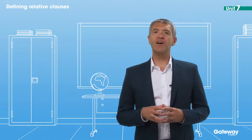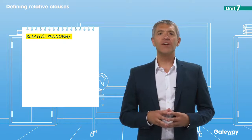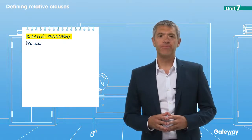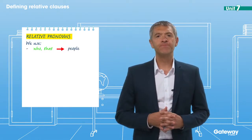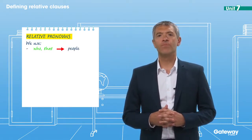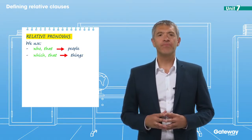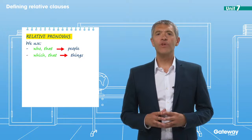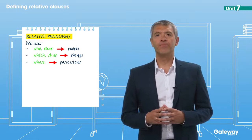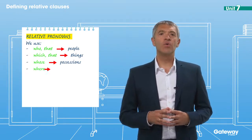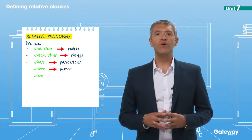The words that you've just seen highlighted are all relative pronouns. Let's look at how we use them. We use 'who' and 'that' for people. We use 'which' and 'that' with things. We use 'whose' to talk about possessions. We use 'where' with places. And we use 'when' with times.